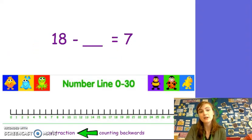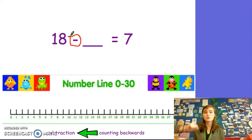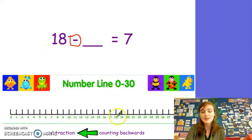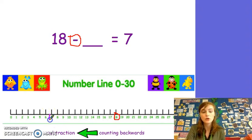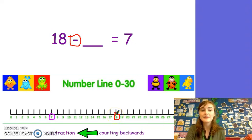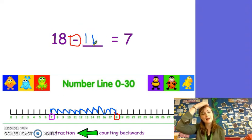Now let's try some missing number subtraction sentences. Can you read the number sentence with me? 18 take away something equals 7. I can see a take away sign — a subtraction sign — so I know that I am going to be counting backwards on my number line. I am going to start at 18 because I know that I had 18 to begin with. Then I took some away and I was left with a total of 7. 7 is my total so I am going to draw a circle around it too. Now because I am taking away, I am going to start on the bigger number and count backwards. Can you help me? 1, 2, 3, 4, 5, 6, 7, 8, 9, 10, 11. 18 take away 11 equals 7.